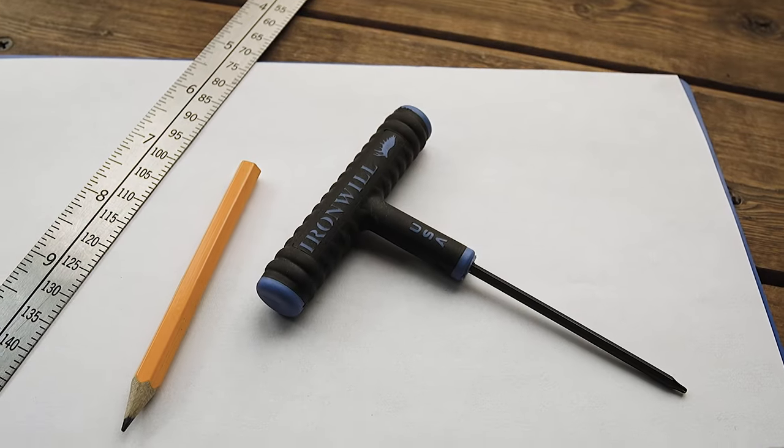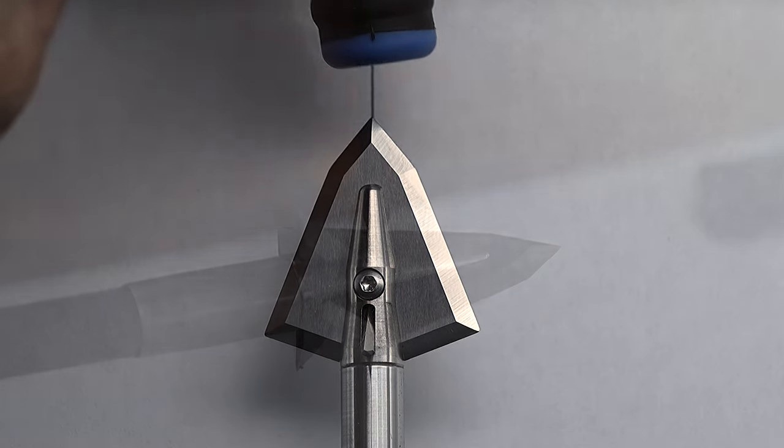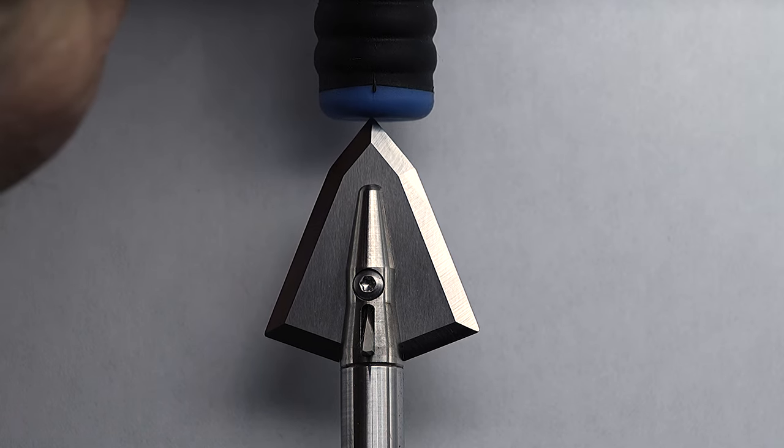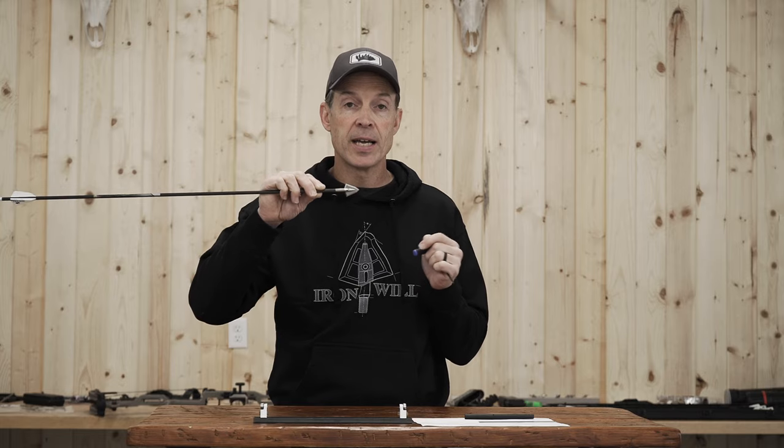If you take a T6 Torx driver and loosen the screw, you'll see that there's some side-to-side movement of the blade. This is by design so that we can align the point of the broadhead exactly to the axis of the ferrule and take out any tolerances.